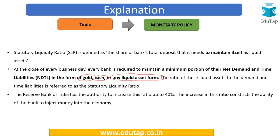The SLR range is 23% to 40%, and the authority to increase or decrease this rate rests with the Reserve Bank of India. As in the case of CRR, an increase in the SLR ratio restricts the ability of banks to inject money into the economy.